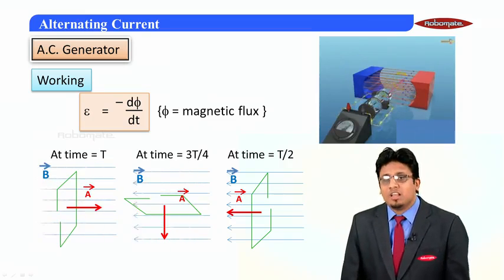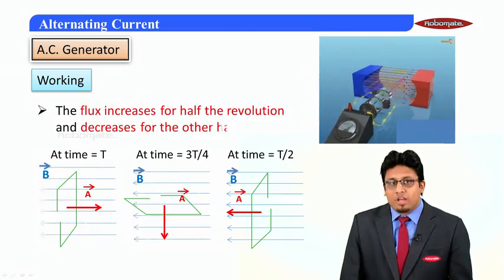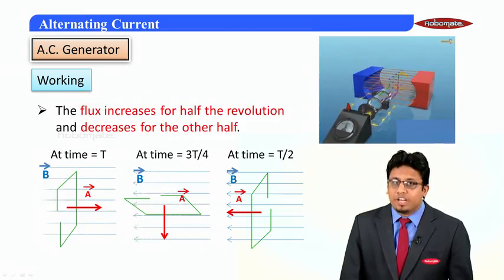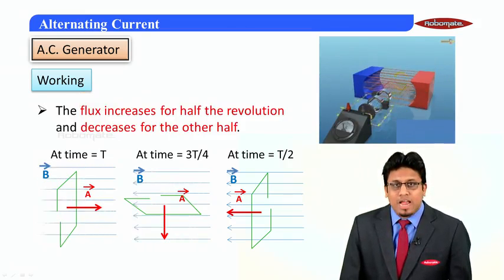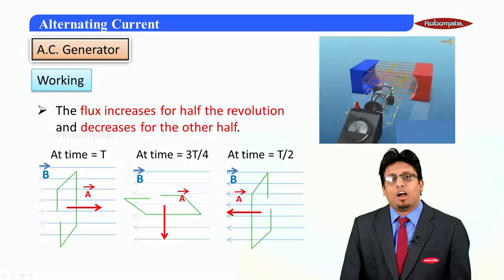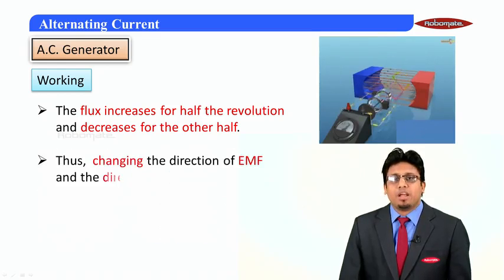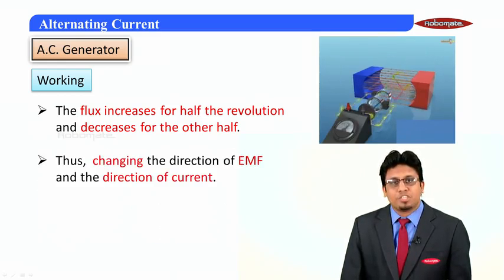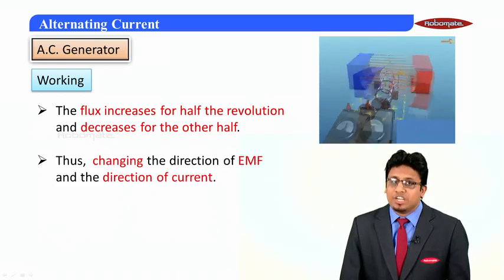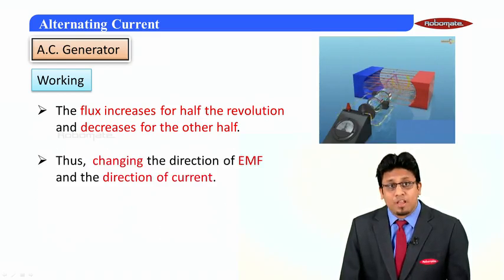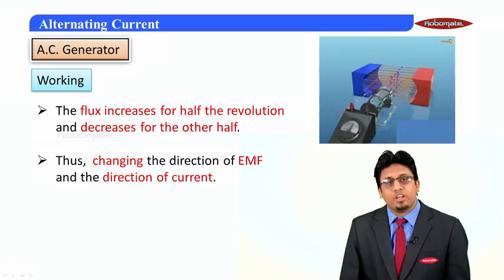And thus, the coil rotates and the flux increases for half of the revolution and decreases for the other half. This change in magnetic flux produces an EMF, changing the direction of EMF itself, which produces an alternating current.